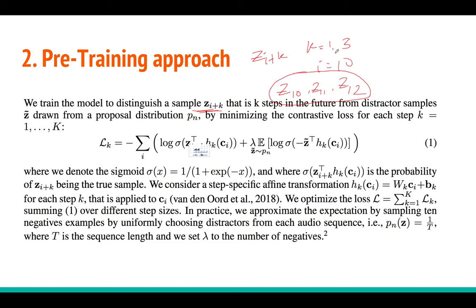Instead of predicting future samples directly, we want to distinguish between the future samples and distractor samples. The distractor samples are drawn from a proposal distribution called P_n, which is basically a uniform distribution over all samples in the audio data. For example, if you have 100 z's in your audio data, you randomly take maybe 10 distractor samples — these are called z-tilde. You distinguish these randomly taken 10 vectors from the future samples. That is the overall idea.